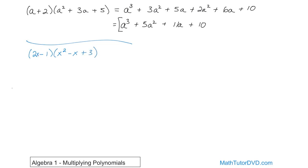We start here: 2x times x squared gives us 2x cubed, adding the exponents. Then 2x times negative x — don't forget the negative — is negative 2x squared. Then 2x times 3 gives you 6x. Now, negative 1 times x squared gives you negative x squared. Then negative 1 times negative x gives you positive x — negative times negative gives you positive.